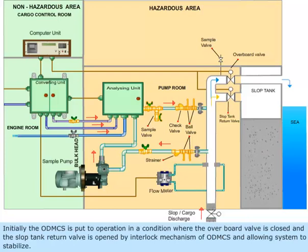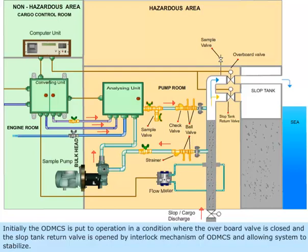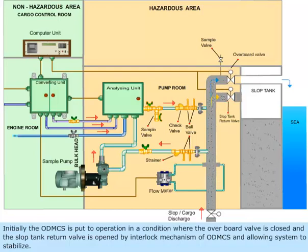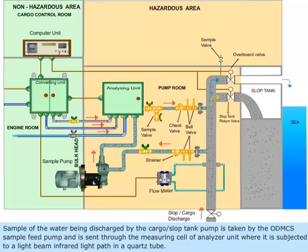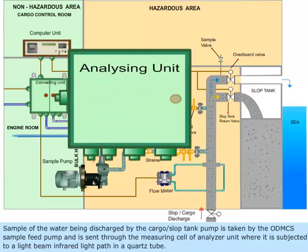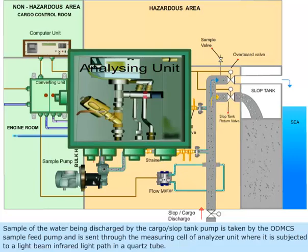Initially, the ODMCS is put to operation in a condition where the overboard valve is closed and the slop tank return valve is opened by interlock mechanism of ODMCS, allowing the system to stabilize. A sample of the water being discharged by the cargo or slop tank pump is taken by the ODMCS sample feed pump and sent through the measuring cell of the analyzer unit, where it is subjected to an infrared light beam in a quartz tube.